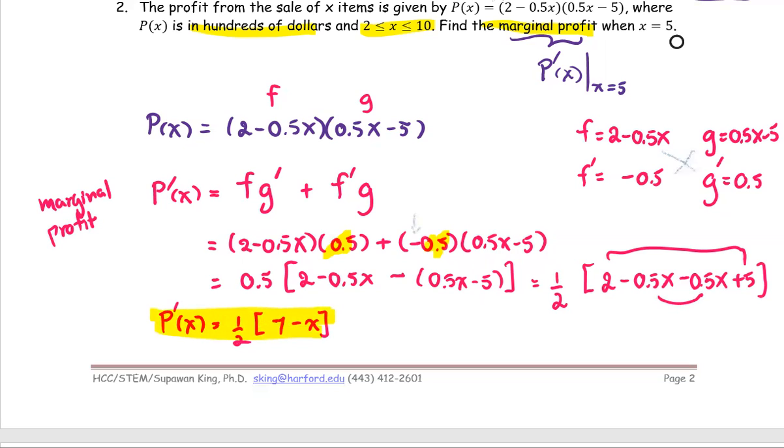When x equals 5, P prime at 5 equals one half multiplied by 7 minus 5, which is one half multiplied by 2 and turns out to be 1. And one is your final answer.